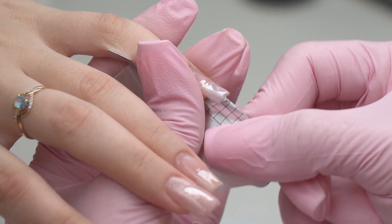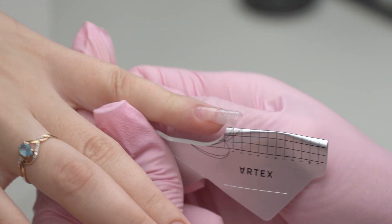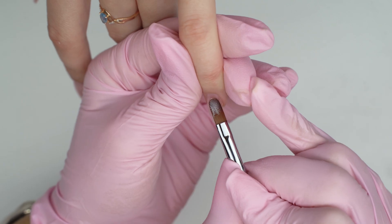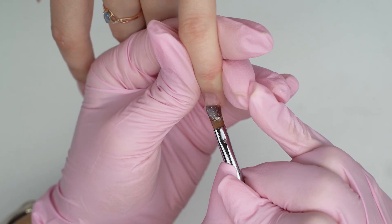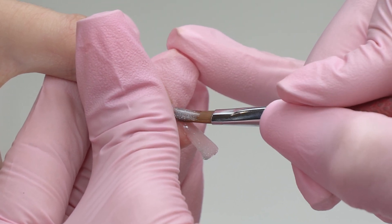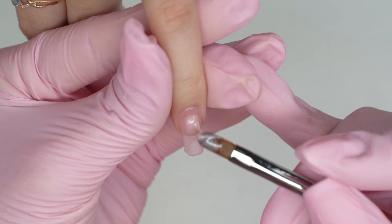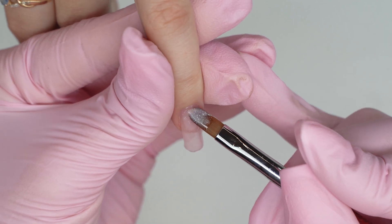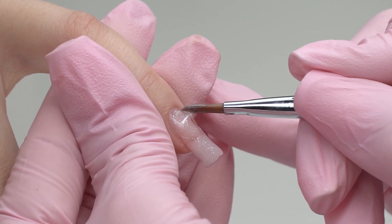I sculpt a square nail shape on the template first, cure it in a lamp, and when I take the form off, there is already a perfect C curve. That's why it's so important to put the forms on the right way. The C curve will make the nail stronger. Nails with defined curves last way longer than flat ones.